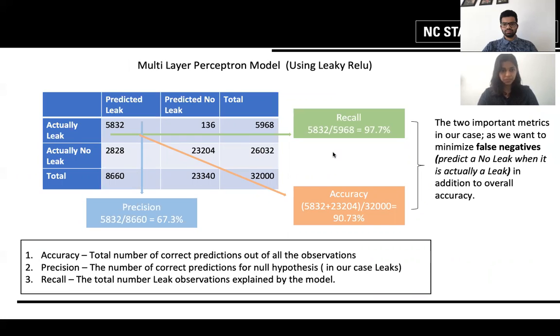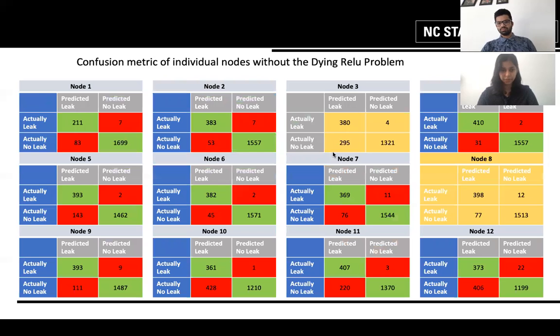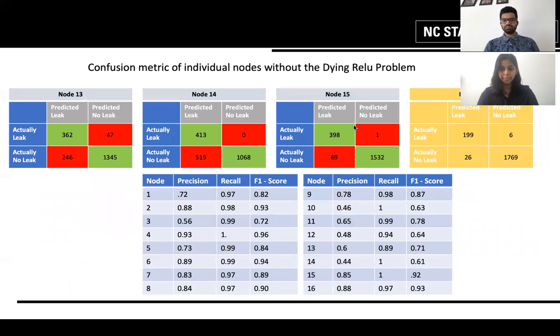Although this is the case, we still consider the leaky ReLU activation function to be better because the recall value has increased from 81% to 97.7% thereby reducing the number of false negatives which makes this model successful. Notice here now, node 3, node 8 do not perform poorly and there is no more the problem of dying ReLU.